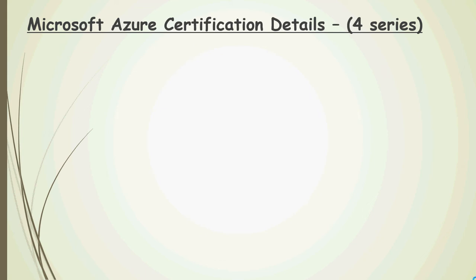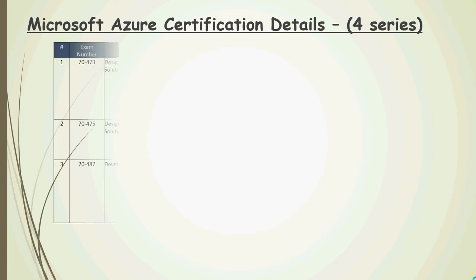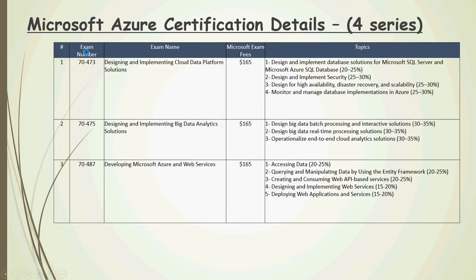In this video we're going to talk about all the certifications available for the Microsoft Azure cloud platform. This slide we call the 'four series' — the exam numbers are 70-473, 475, and 487, and that's why we call it the four series.